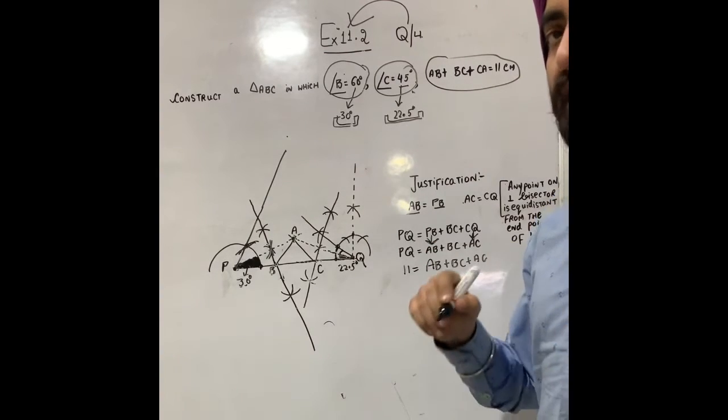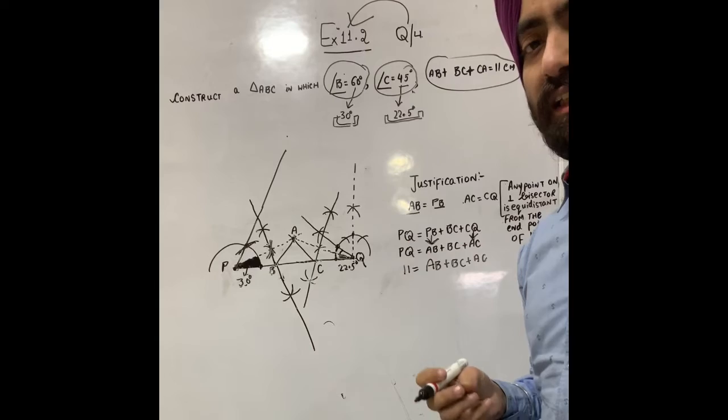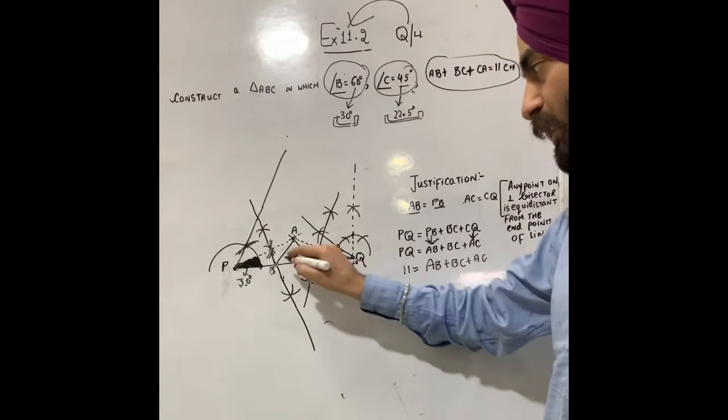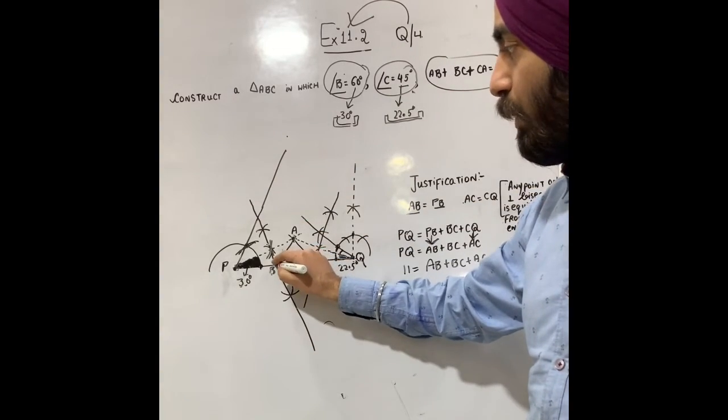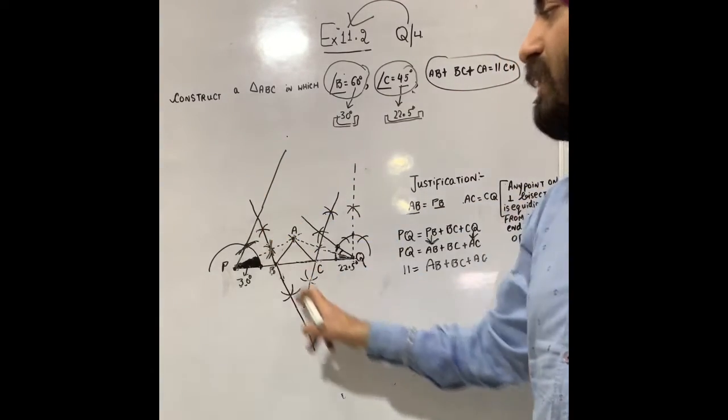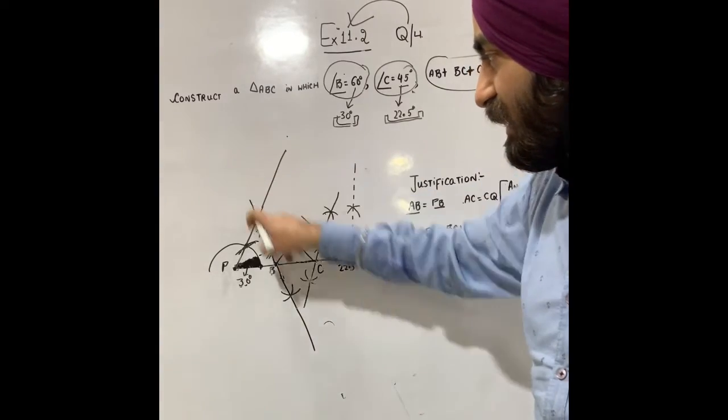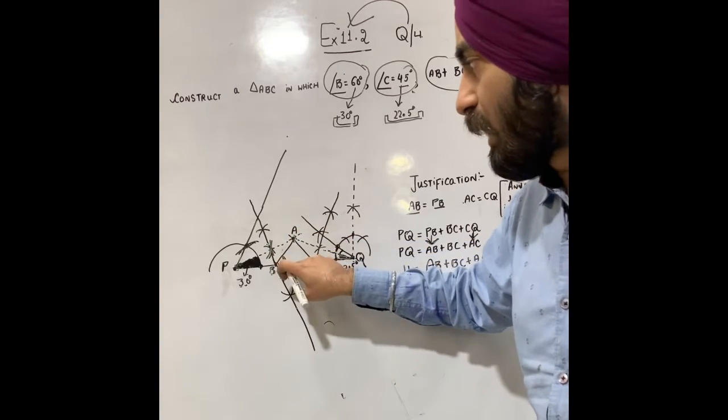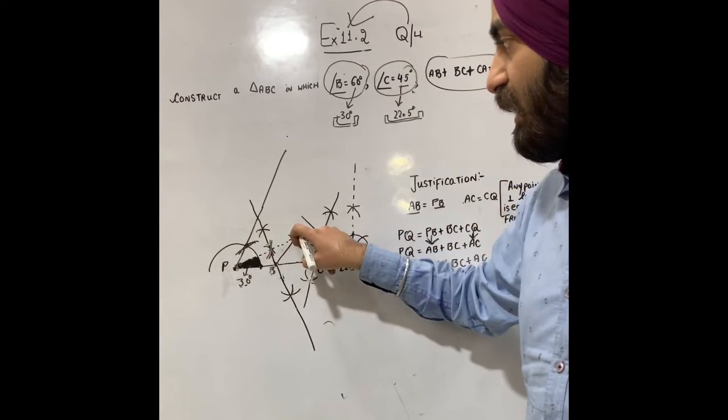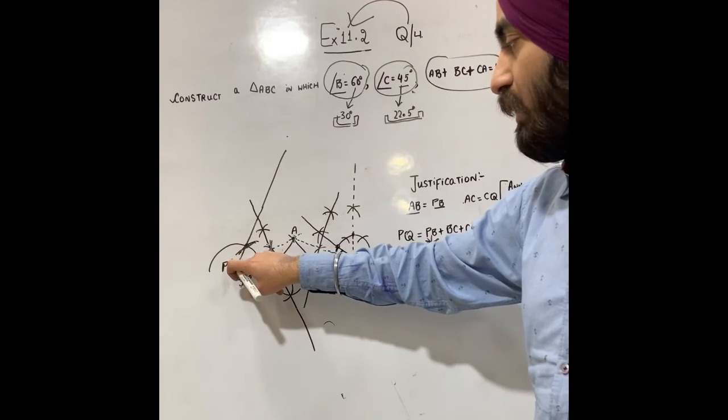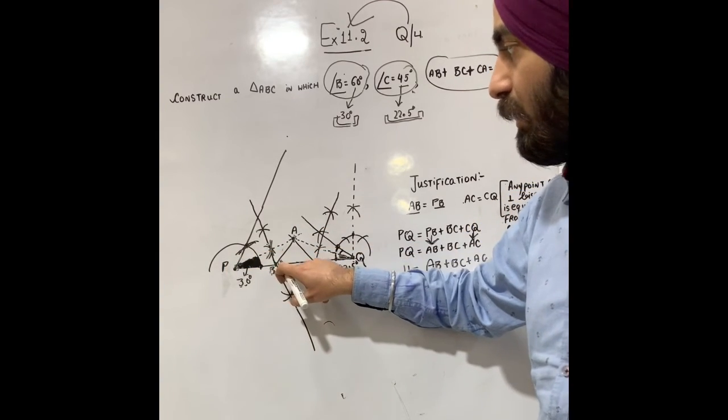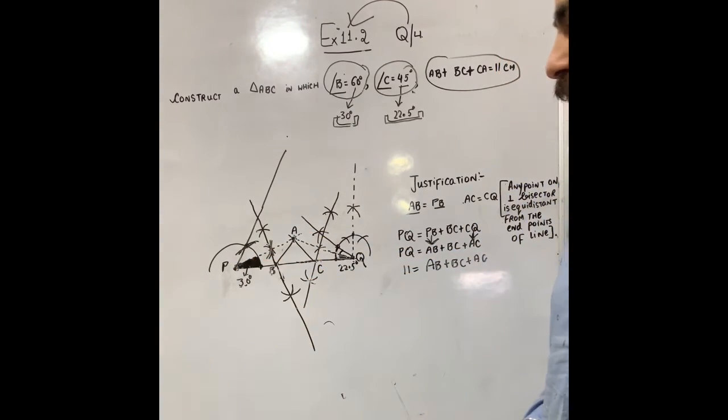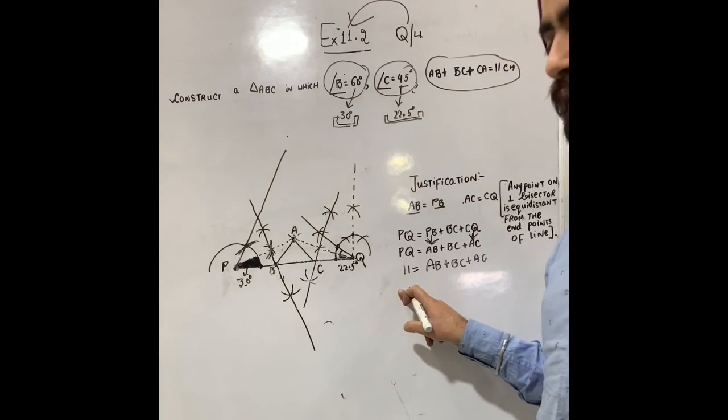This is the justification. Steps of construction you already know how to write. Basically, students get confused in justification. The point being used in justification is that any point on perpendicular bisector will be equidistant from the endpoints. Like, if this line is the perpendicular bisector of AP, then point B on it will be equidistant from endpoints A and P. That's why BP equals AB. This is how we solve and prove it correctly.